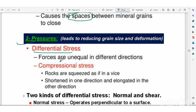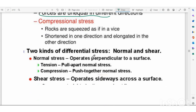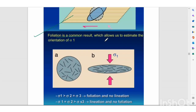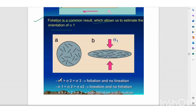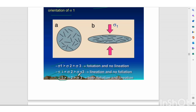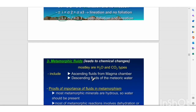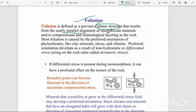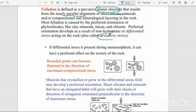In differential stress, forces are unequal in different directions. There are two types: normal (tension or compression — extension or compression) and shear (sideways movement). If σ1 > σ2 = σ3, foliation will occur with no lineation. If σ1 = σ2 > σ3, lineation occurs with no foliation. If σ1 > σ2 > σ3, both foliation and lineation occur. These are planar structures resulting from parallel alignment of sheet silicate minerals, developing under deviatoric or differential stress.